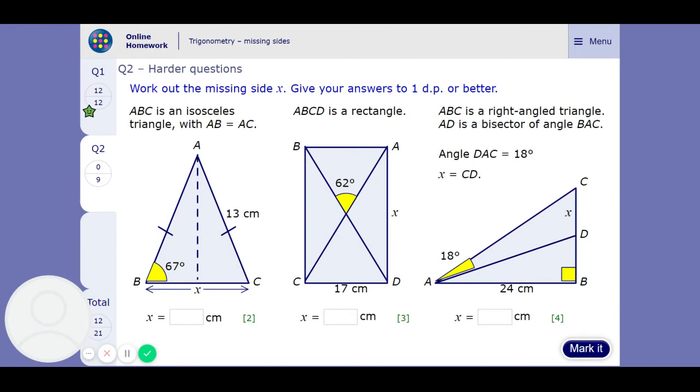And then double it, because we only found out half the size. You're going to get, so that bottom side there is going to be 10.2. Didn't need to look at that top angle, but there we go.